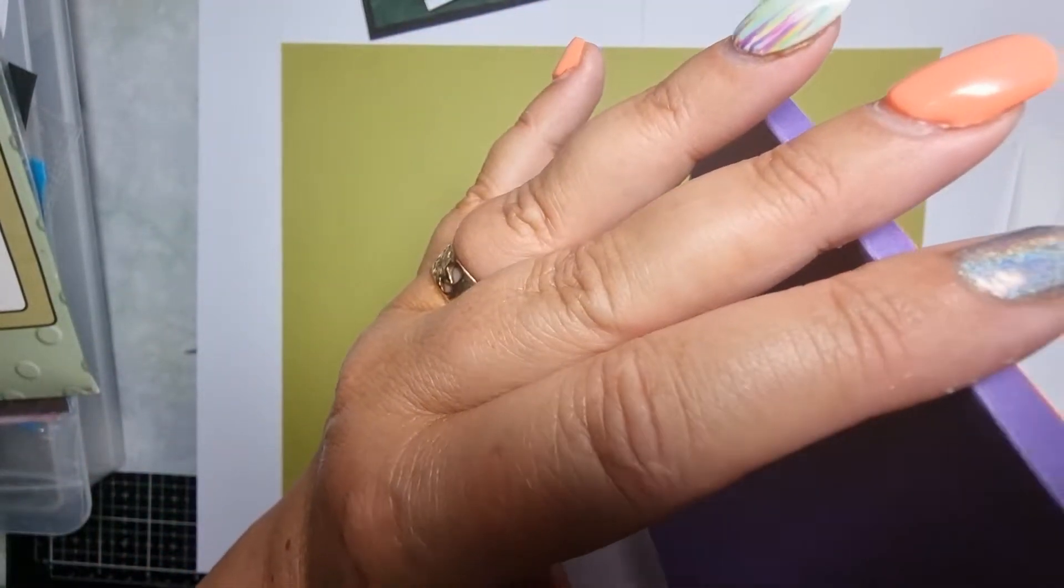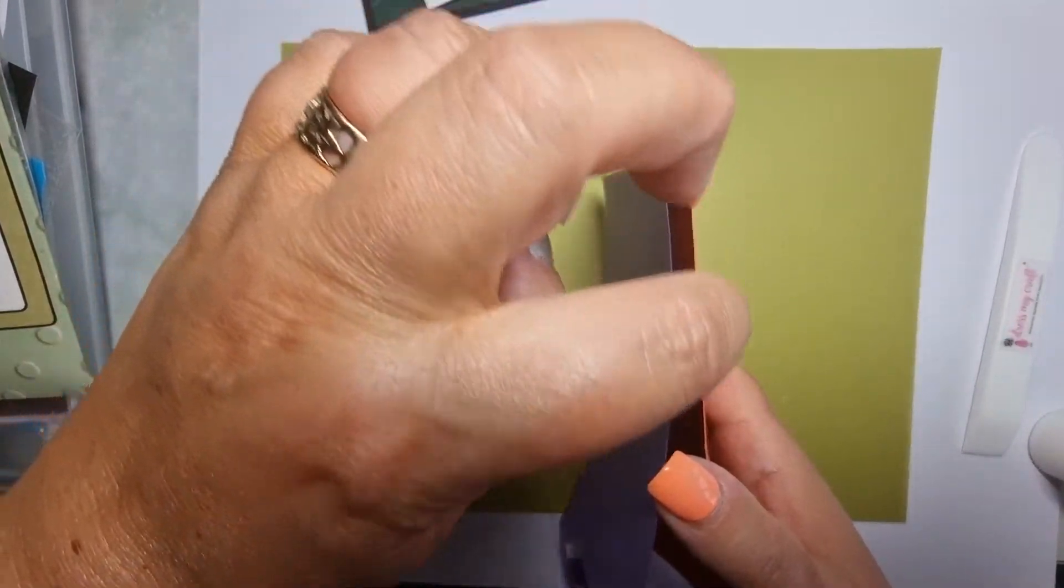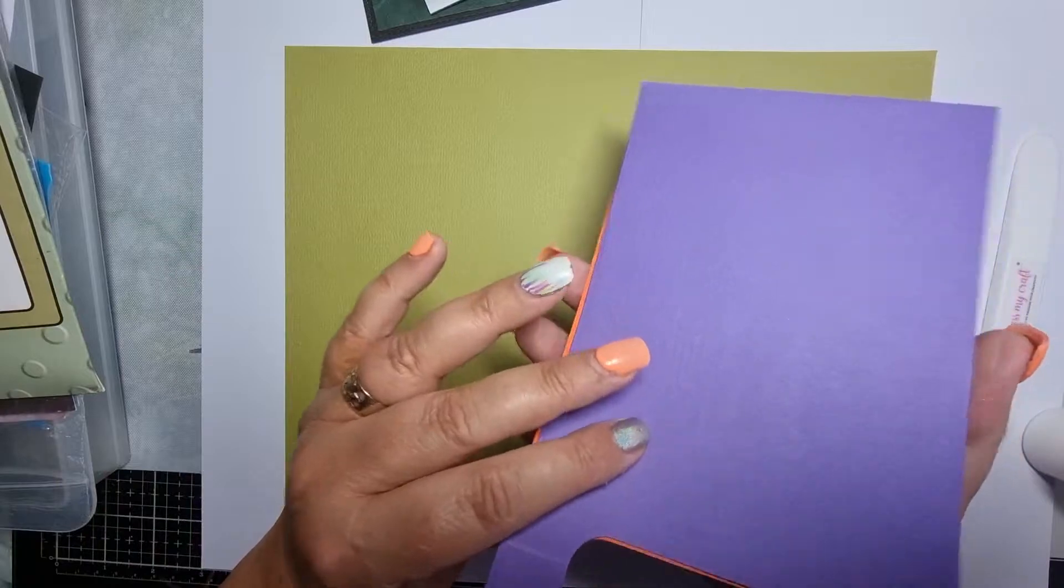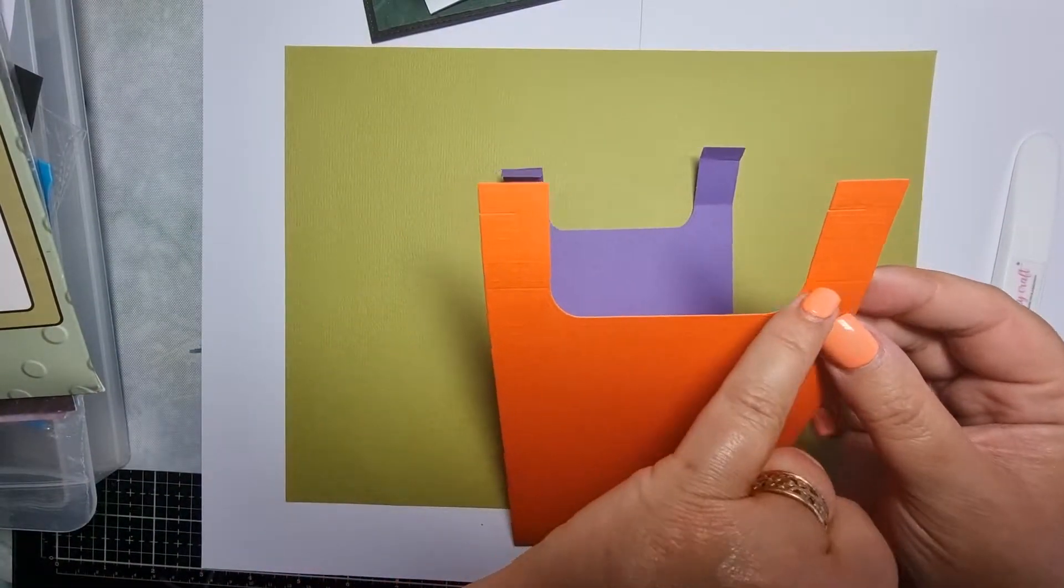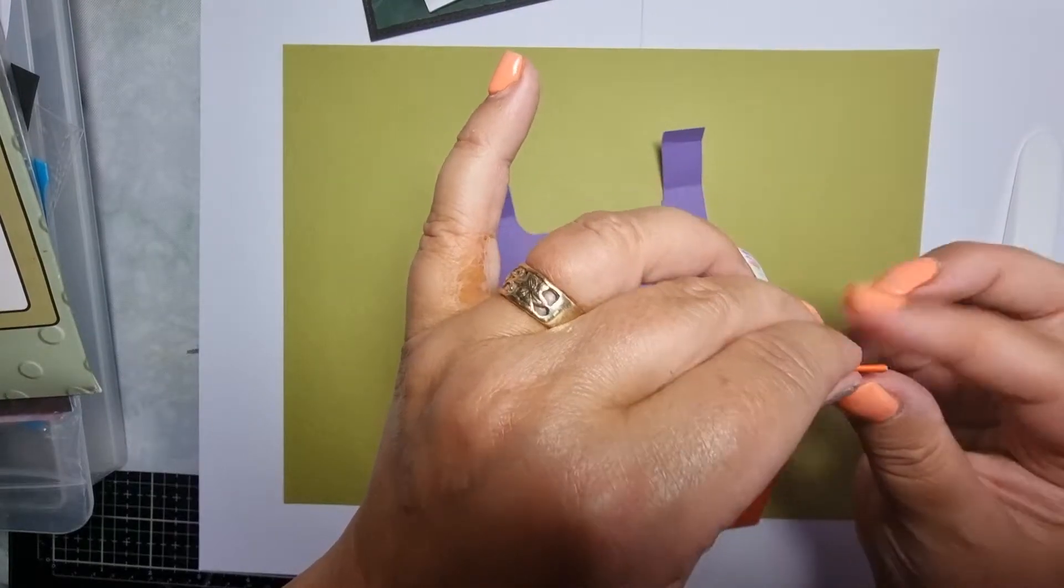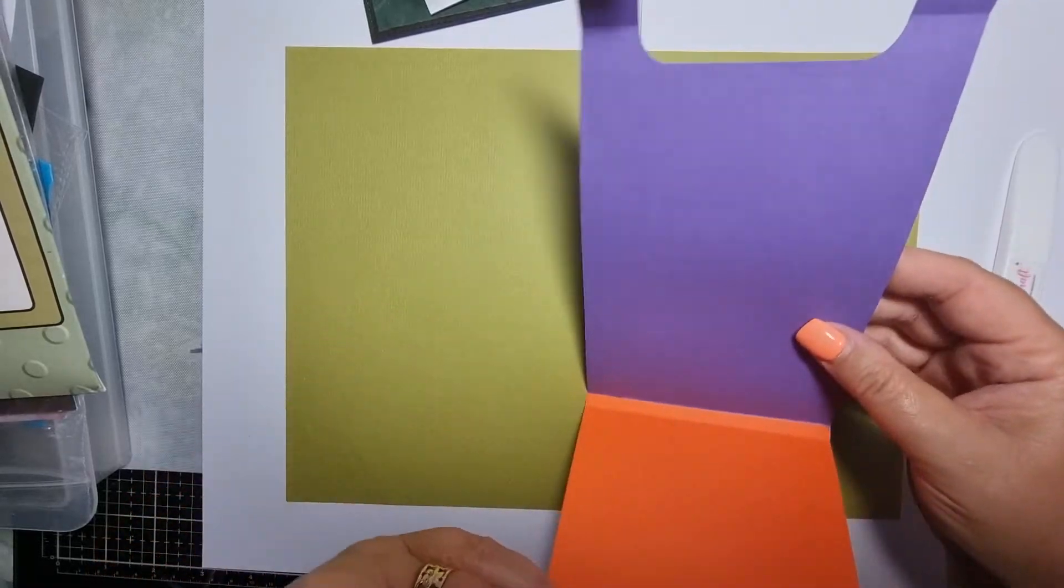So, because I've done it that way, as you can see I've got a gap there, which I like. The bottom, really simple. So, see your creases there? Fold those in. And on the other side, fold that in.